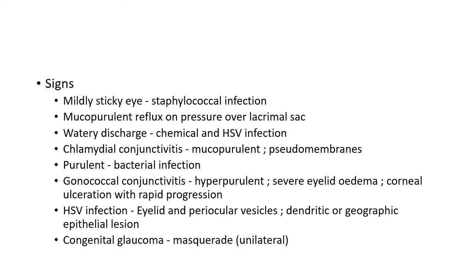Signs of neonatal conjunctivitis: mild sticky eye in staphylococcal infection; mucopurulent reflux on pressure over lacrimal sac in nasolacrimal obstruction; watery discharge in chemical conjunctivitis and HSV infection. In chlamydial conjunctivitis there will be mucopurulent discharge and pseudomembranes. Purulent discharge is seen in bacterial infection; in gonococcal conjunctivitis the discharge is hyperacute with severe eyelid edema and corneal ulceration with rapid progression. In HSV infection, there can be eyelid and periocular vesicles and dendritic or geographic epithelial corneal lesions. Congenital glaucoma is an important masquerade of neonatal conjunctivitis and should be ruled out, especially in unilateral cases.